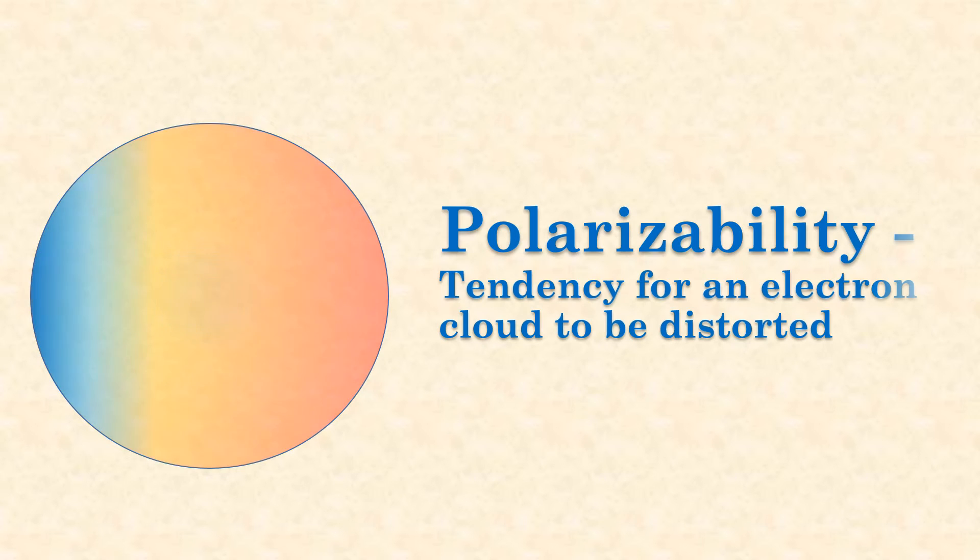Imagine an atom with its electron cloud around a nucleus. The electrostatic potential map shows blue with low electron charge density and red, high electron charge density. At any one instant, the electron cloud can be distorted.